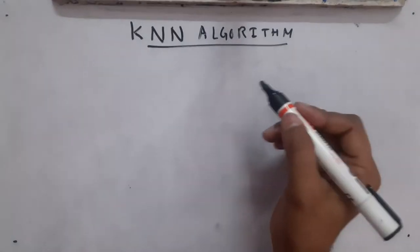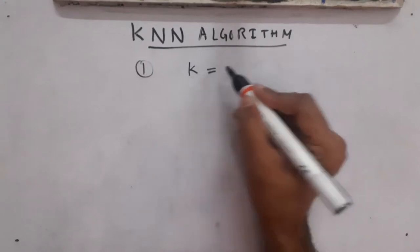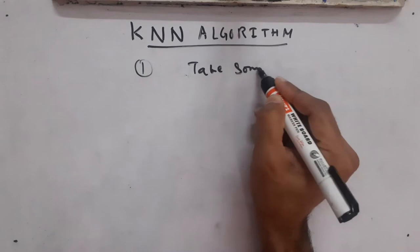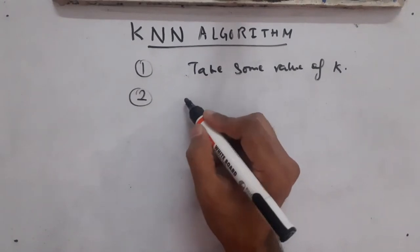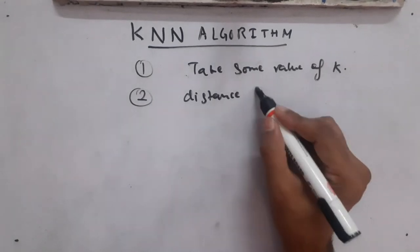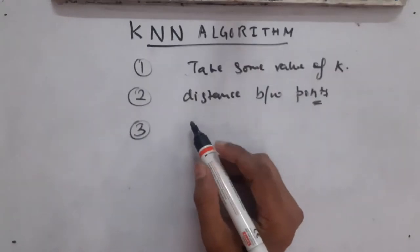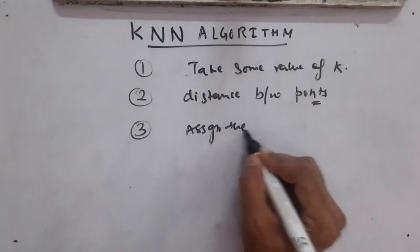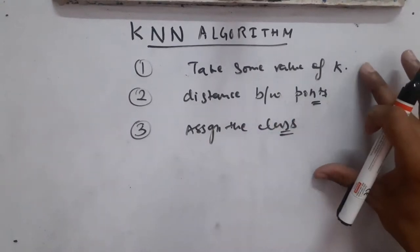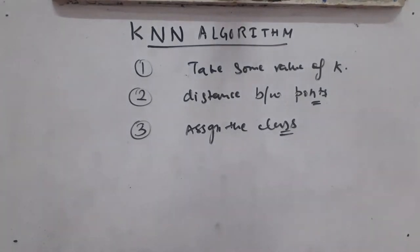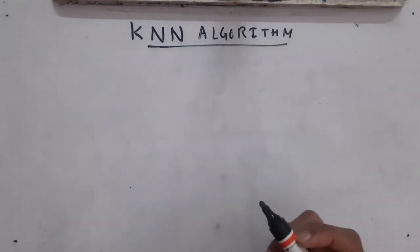I'm going to take an example. The steps in the KNN algorithm are: first, define the value of k — take some value of k; second, find the distance between points; and third, based on the distance, assign a class to the new point. Let me make this clear through an example.